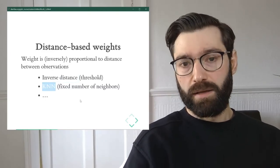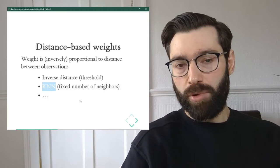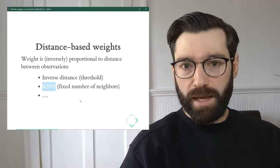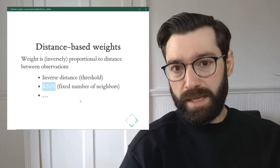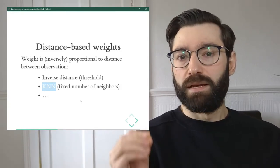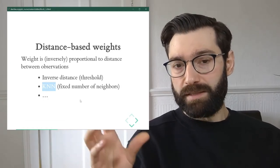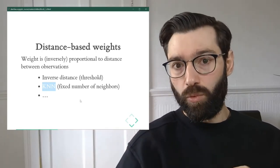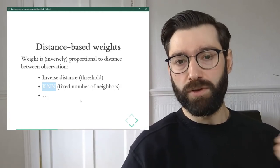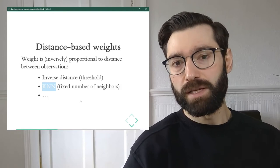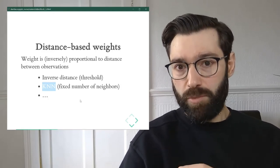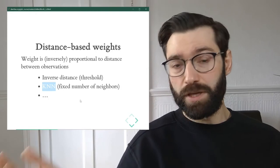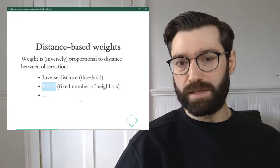Another approach is the k-nearest neighbors (KNN) algorithm, where k is an arbitrary value. The idea is to define neighbors based on distance, but what matters is not the specific distance so much as whether that distance is among the k shortest distances within the geography. For example, if you use k equals five — five nearest neighbors — for every observation, the neighbors will be the five nearest observations, regardless of their absolute distance, because what matters is that those are the nearest ones once all distances are calculated.